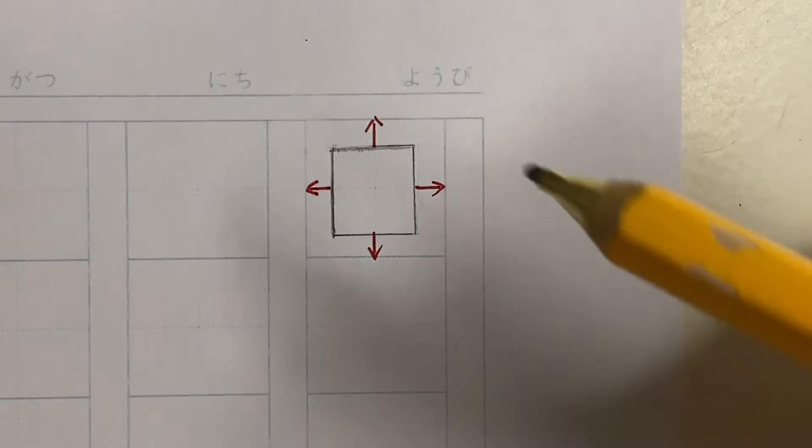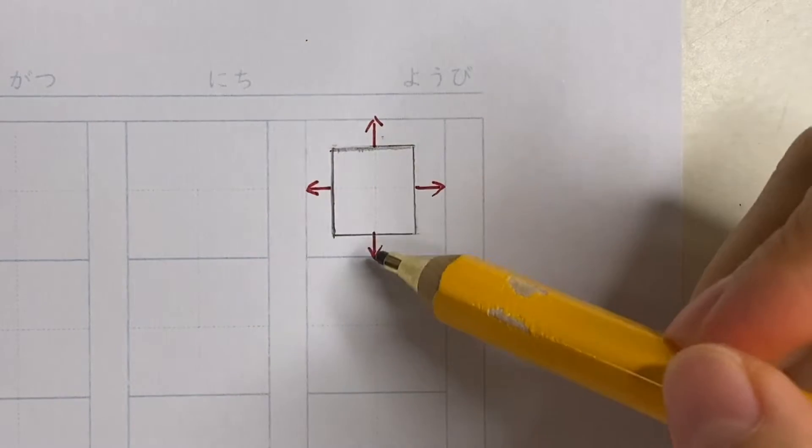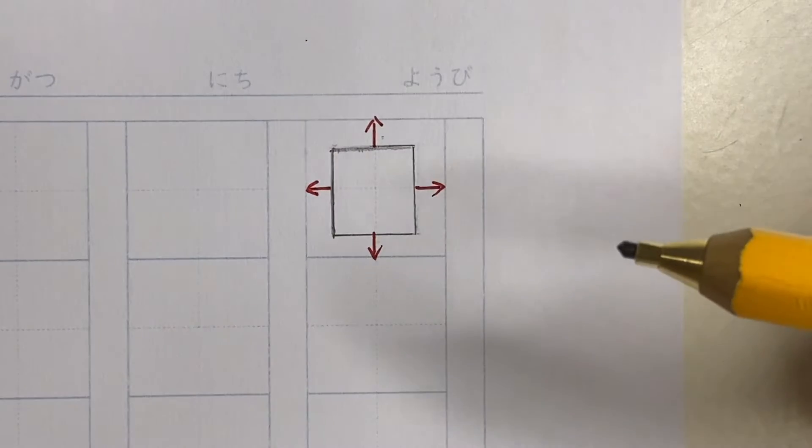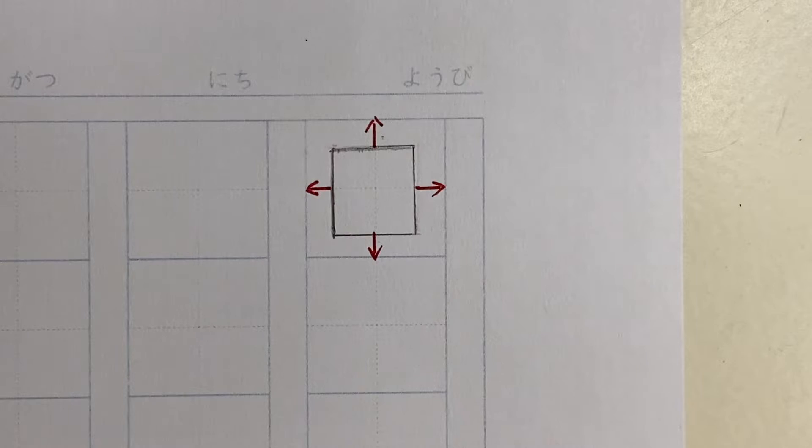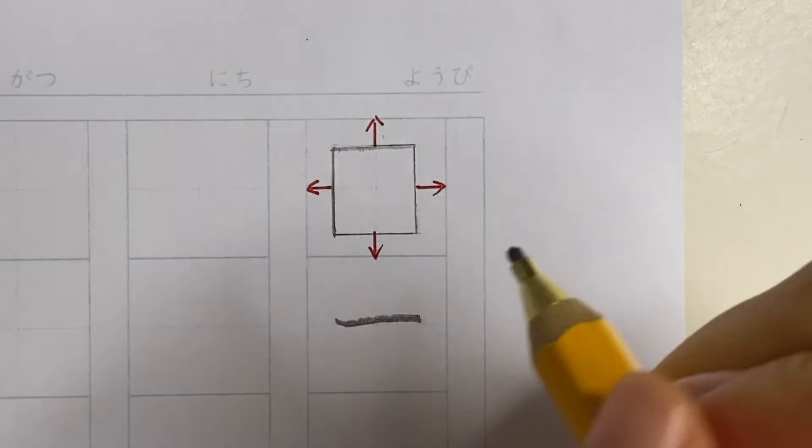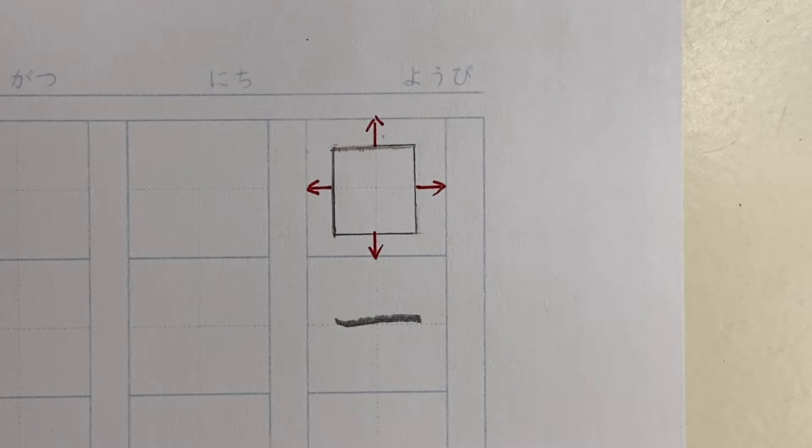To write beautiful kanji in the boxes, we have to leave relatively equal margins on the four sides. For the horizontal strokes, we have to write from left to right.